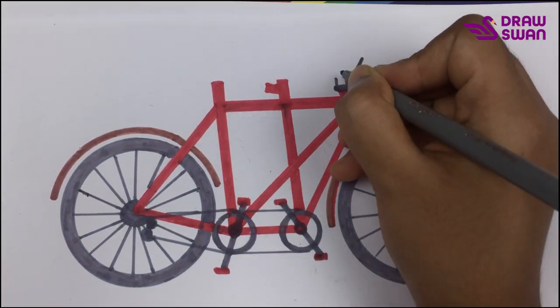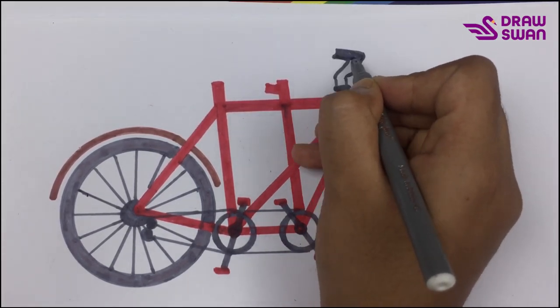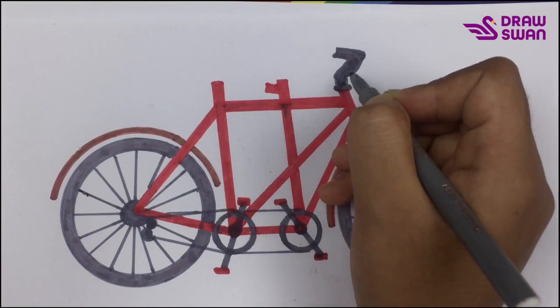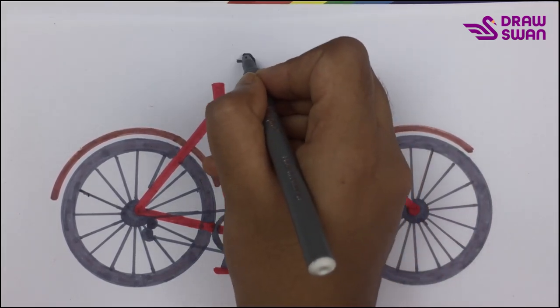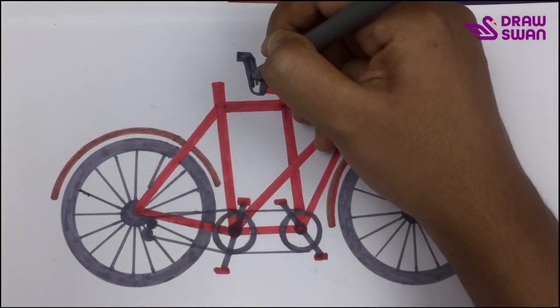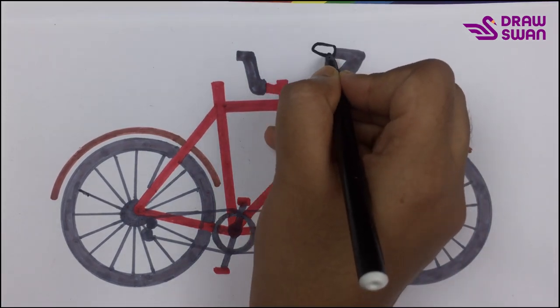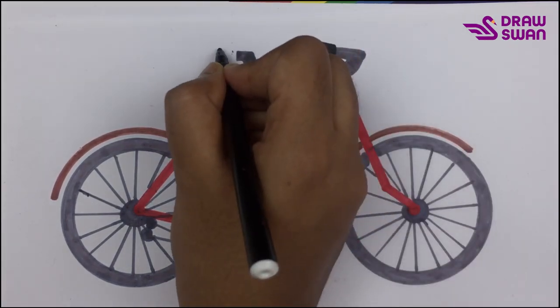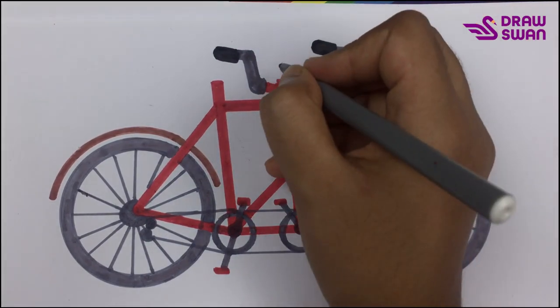Now I'm drawing its handle with grey pen. And I'm using a little bit of black color. Let's draw its seat.